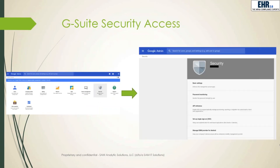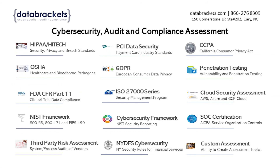Next, here's a simple way to get into G Suite security access. The security panel is really easy to access — you can see right here from the Google Admin home page, and once you click on that you're in your security option settings. For more information, click on the link below or visit databrackets.com.